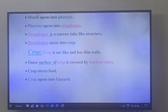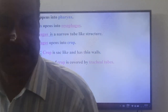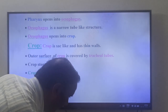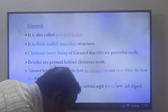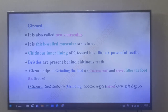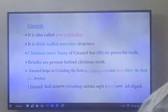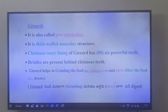Crop opens into the gizzard. The gizzard is also called proventriculus — very important. The midgut is called ventriculus, so because the gizzard is present in front of the midgut, it is called proventriculus. The gizzard is a thick-walled muscular structure.